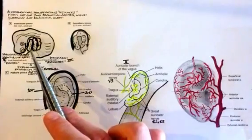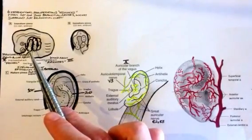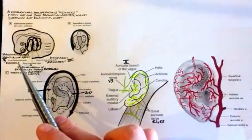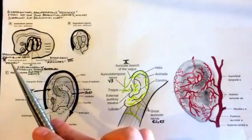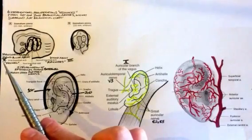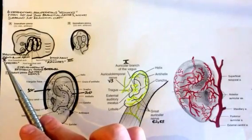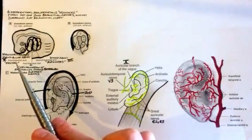They're derived from the first branchial arch, the mandibular arch is another name, because a lot of structures that contribute to the mandible and muscles of mastication, including the innervation which is trigeminal nerve 5, are all derived from this mandibular or first branchial arch.